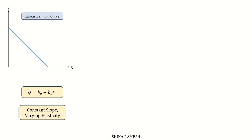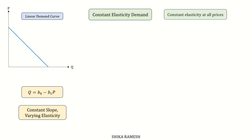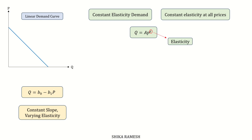The most common form of a non-linear demand curve is the so-called constant elasticity demand curve, which implies constant elasticity at all prices — or in simple words, elasticity is the same at every point along the curve. The constant elasticity demand curve has the exponential form q = a · p^ε, where a is a positive constant and ε is the elasticity at every point along the demand curve, which tends to be negative.